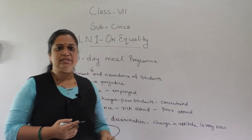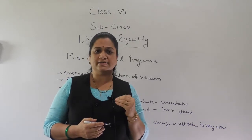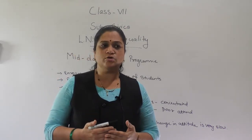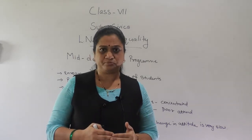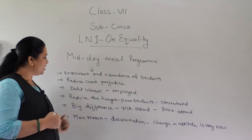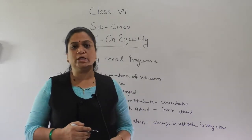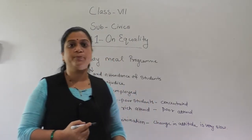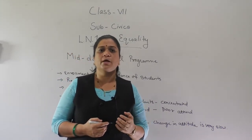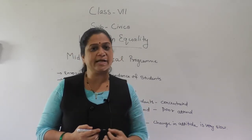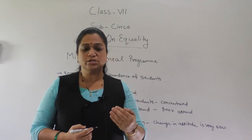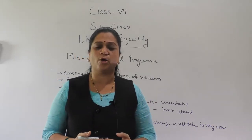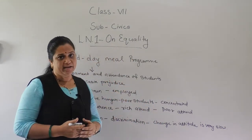The second benefit was the reduction of caste prejudice. The feeling of lower caste and upper caste among children — the feeling of inferiority — was reduced through this scheme, because whatever meal they received, they sat together and ate together. This reduced the feeling of caste prejudice. Dalit women were also employed to cook the food for children, so these women also got employment. Additionally, the hunger of poor students was a major problem that prevented them from concentrating and attending school. Because of this scheme, poor students got food to eat, their hunger was reduced, and the attendance of poor children increased.